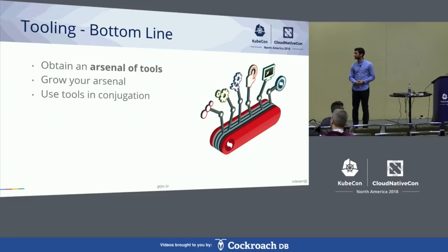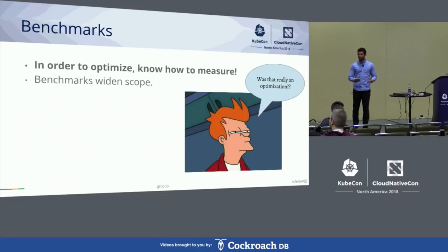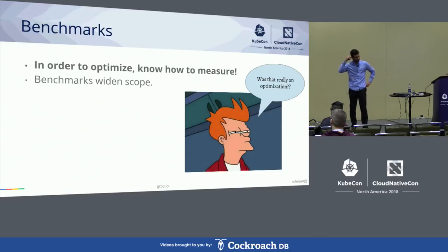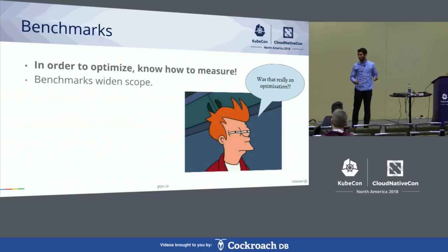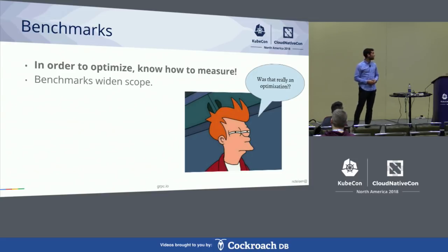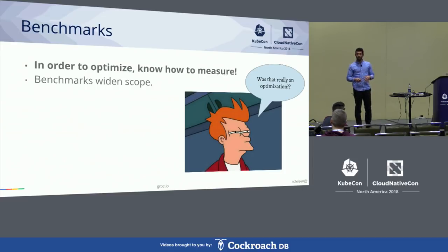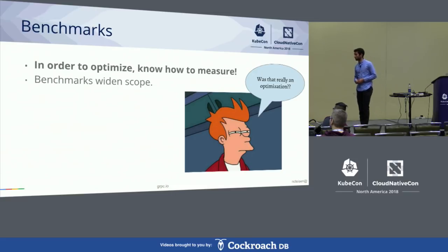So that's tooling. Let's move on to benchmarks. In order to optimize, you need to know how to measure. I have Confused Fry asking, was that really an optimization? If you can't prove it, it's a little bit harder to say. Where tooling narrows scope, I see benchmarks as widening the scope of impact.